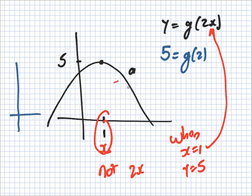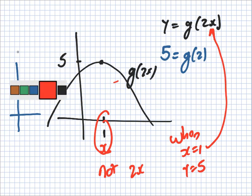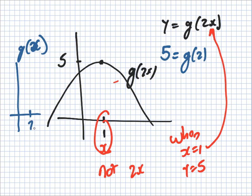So that means G of 2 equals 5. So if I was to draw... This is G of 2X. If I was to draw G of X... G of 2 makes 5. I'm happy I'm right. But I can see you're confused.